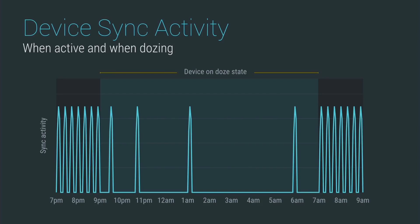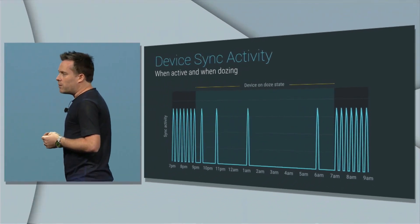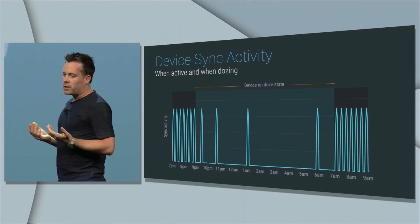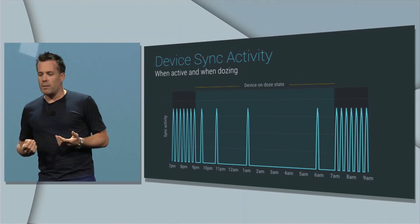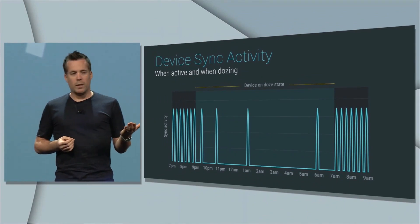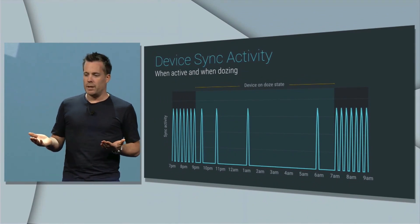The idea behind Doze mode is it will selectively put apps to sleep. They will only wake up if they happen to receive a high priority message, which you yourself are able to toggle on or off as you need to.